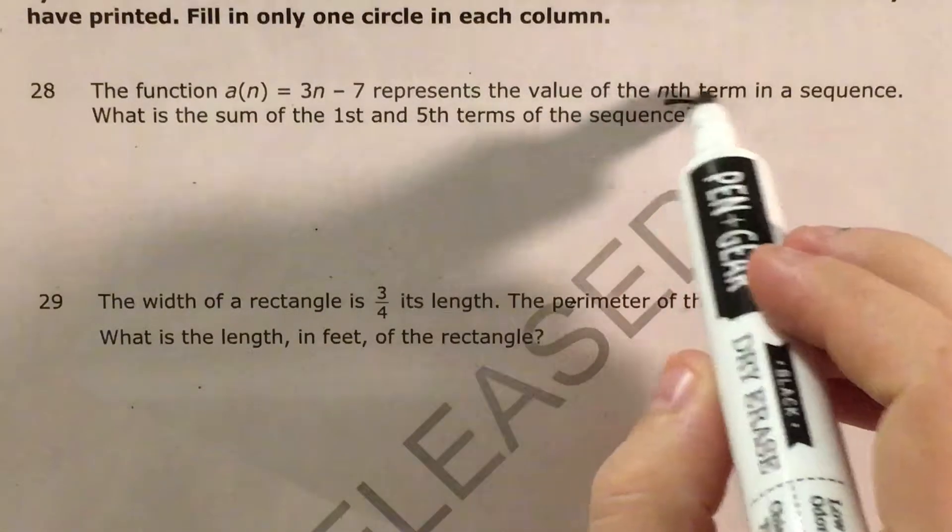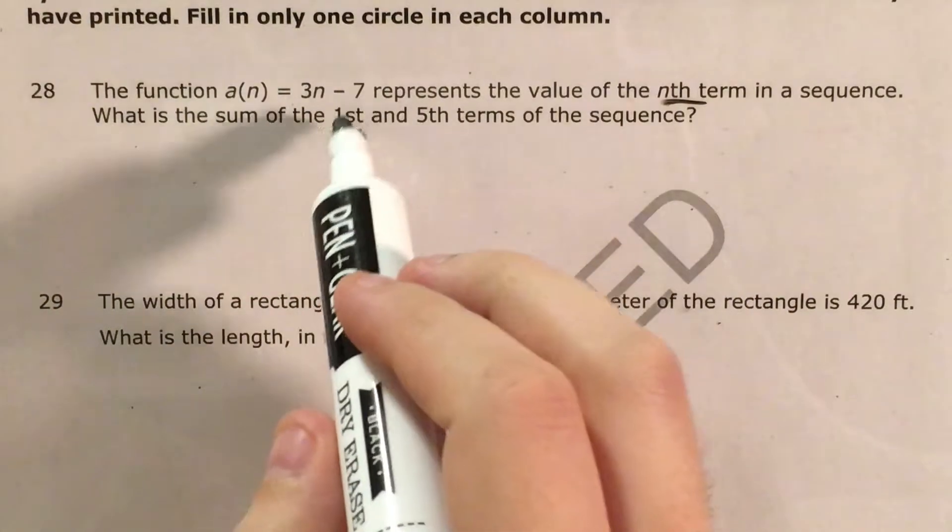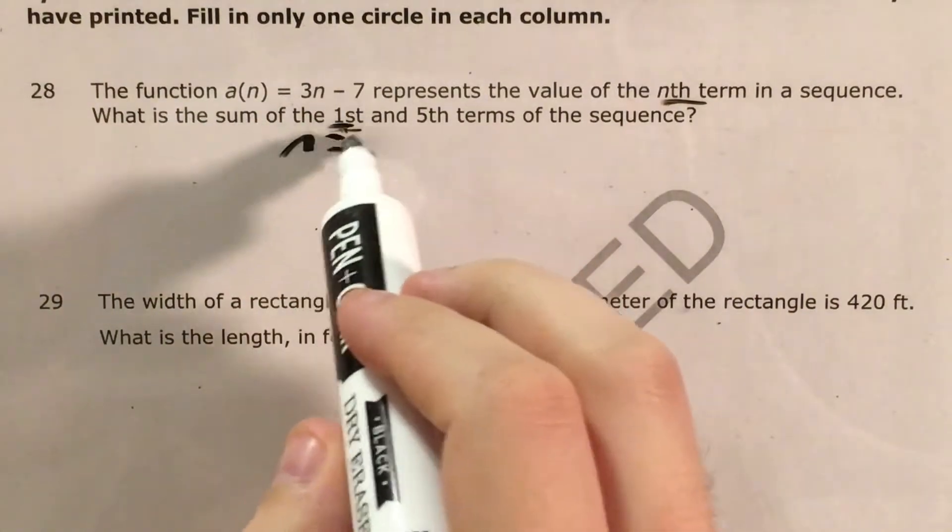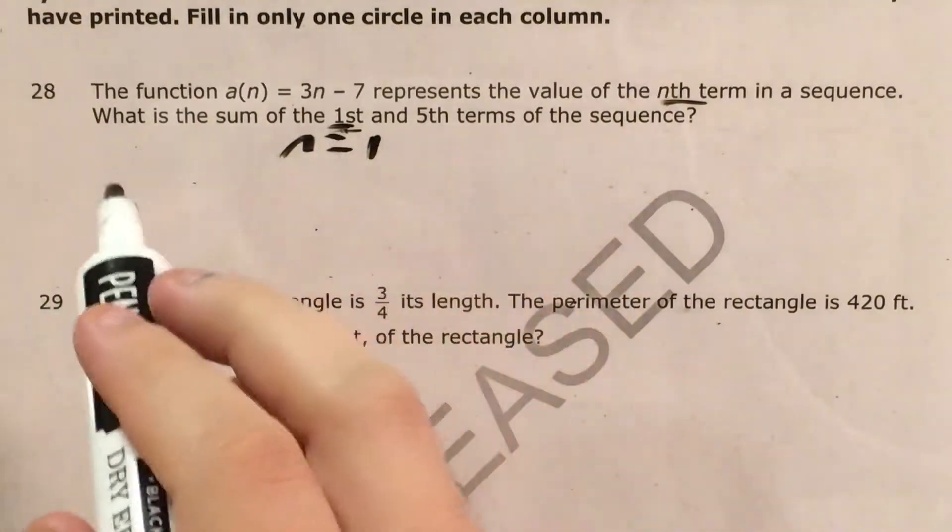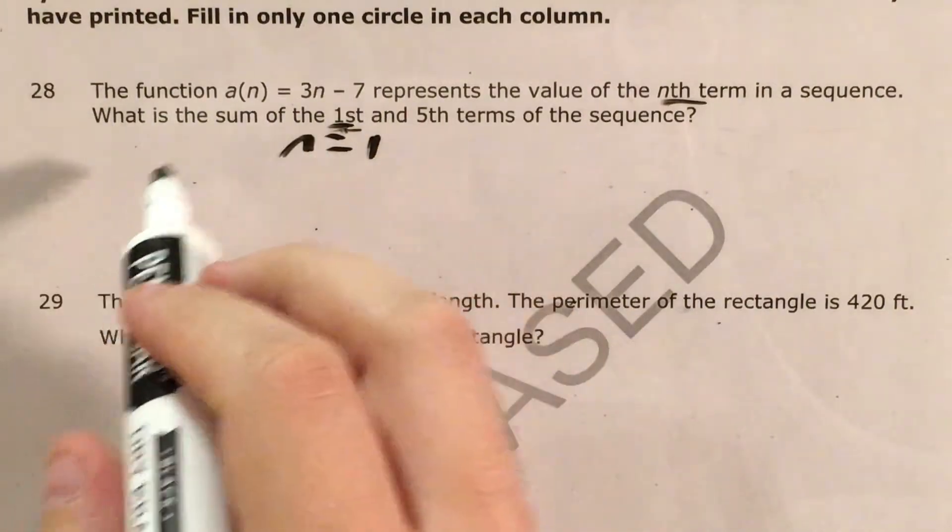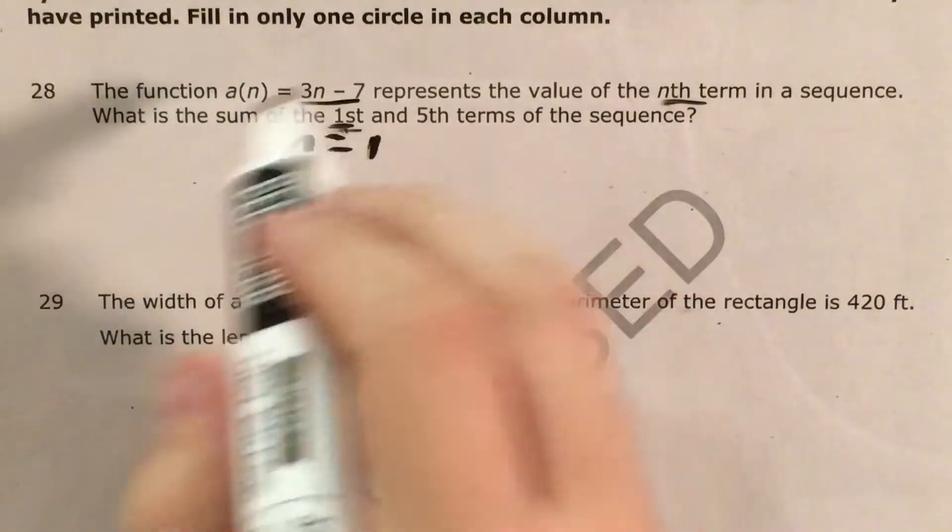because if this represents the nth term in a sequence and I'm looking for the first term, that means I'm just going to have 1 be my n, and if I'm looking for the first term and my n equals 1,